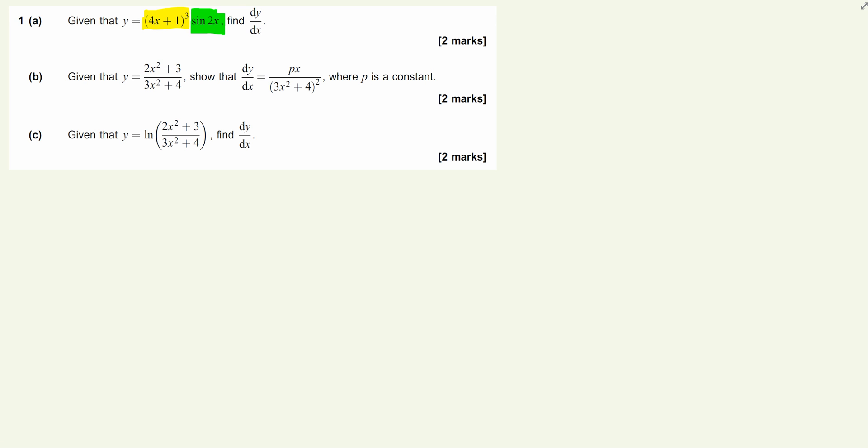When we're looking at the product of two functions, we use the product rule to differentiate. The product rule says dy/dx equals u times the differential of v plus v times the differential of u - first times the differential of the second plus the second times the differential of the first.